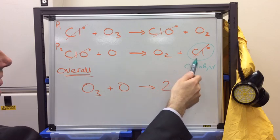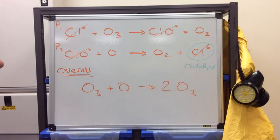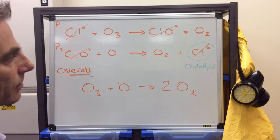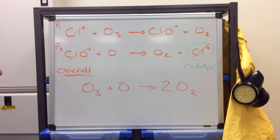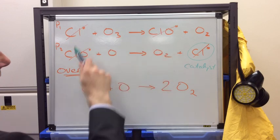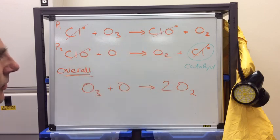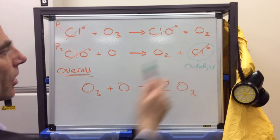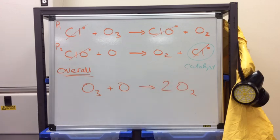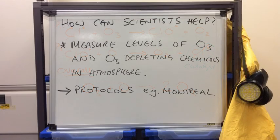Eventually, the chlorine radical will combine with another radical and become stable again. But they think about 100,000 of these cycles, this chain reaction, will take place before it becomes stable again. So, very harmful for the environment, these chlorine radicals.